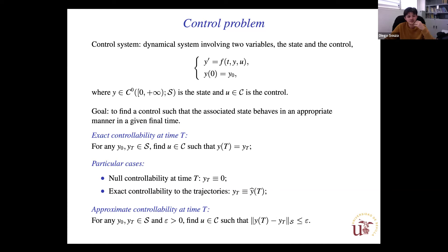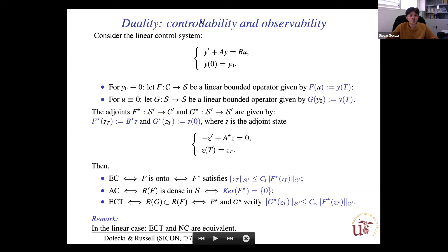These are qualitative properties of controllability. It is well known that these controllability properties are equivalent to some quantitative properties. To quantify these qualitative properties, one can use the duality between controllability and observability, which is a classical argument found in the Fattorini-Russell paper of 1971.